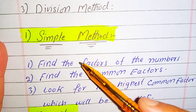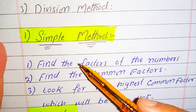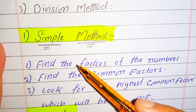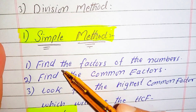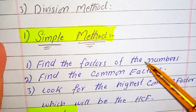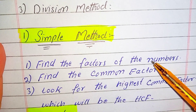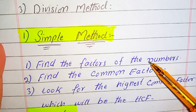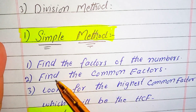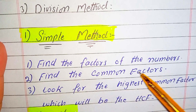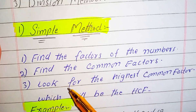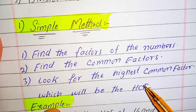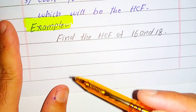You can use the simple method to find out the HCF of any number within a few seconds. First of all, you have to find out the factors of the numbers for which you want to find the HCF. Then find the common factors, and look for the highest common factor, which will be the HCF.